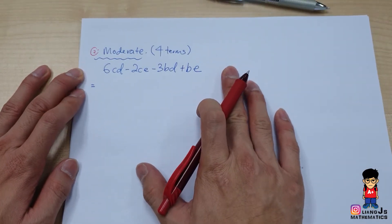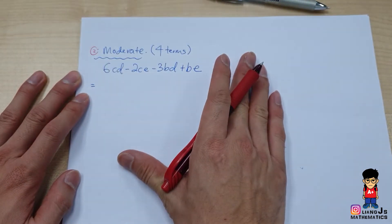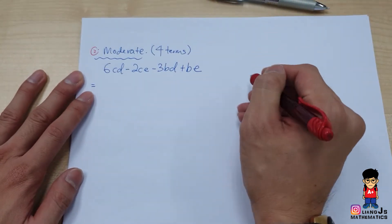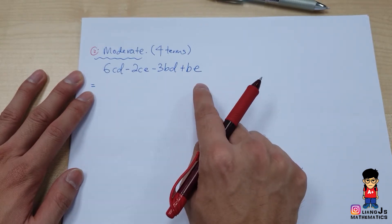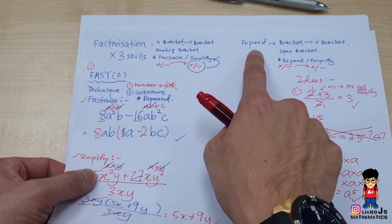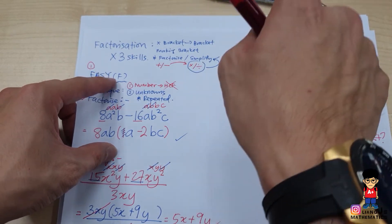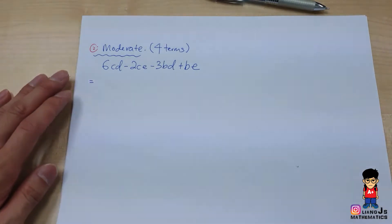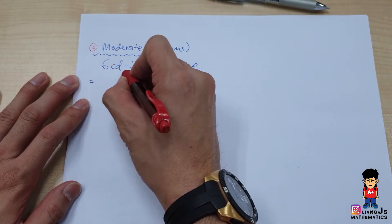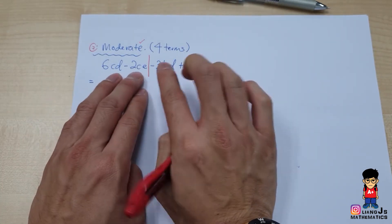There are common mistakes students make, so let me explain the proper steps and technique. The reason behind it ties back to expand — factorization is the reverse of expanding. The technique starts like this: Step 1 — you see 4 terms, so go for moderate. Cut them in half: two terms and two terms.